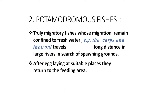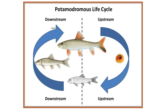Now, potamodromous fishes are truly migratory fishes whose migration remains confined to fresh water. For example, the carps and the trout travel long distances in large rivers in search of spawning grounds. After egg-laying at suitable places they return to the feeding area. The potamodromous life cycle diagram shows a downstream and an upstream diagram, with fishes such as Labeo rohita.